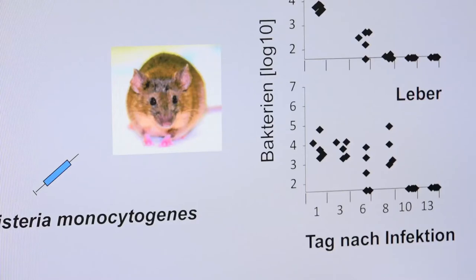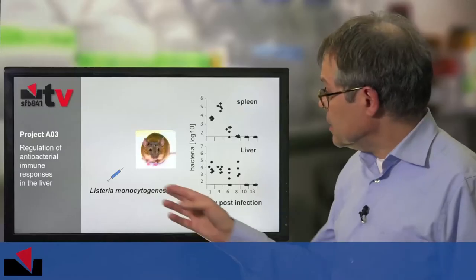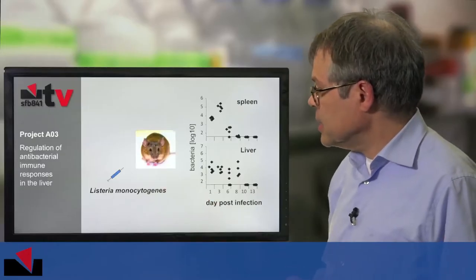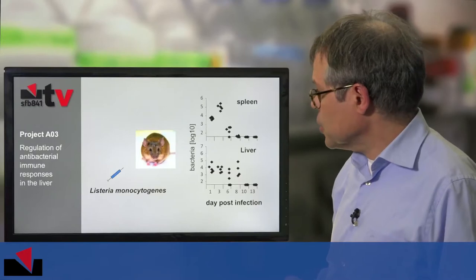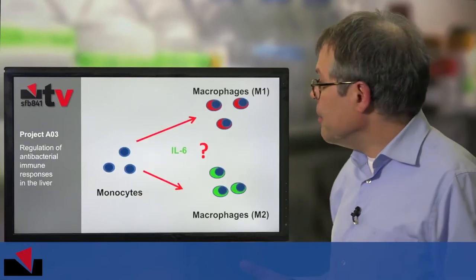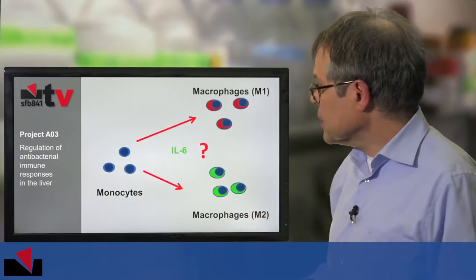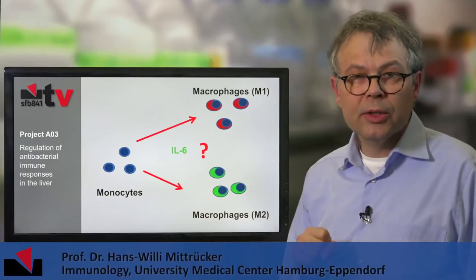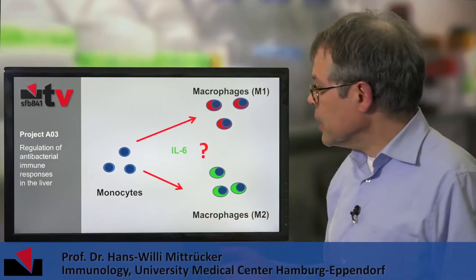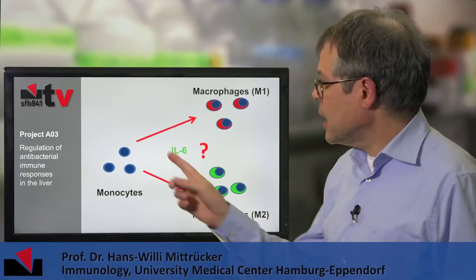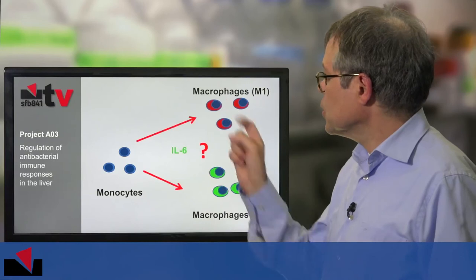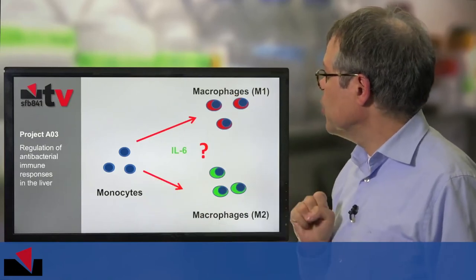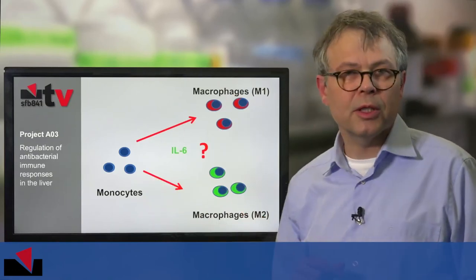We analysed this process in the infection model with Listeria monocytogenes, and our main aim is to figure out what interleukin-6 is doing in this process. How does IL-6 control the maturation of monocytes to M1 macrophages or M2 macrophages?